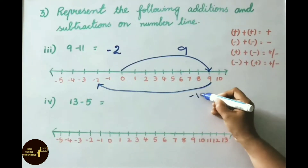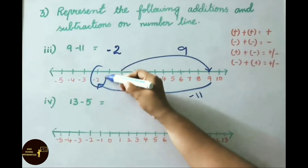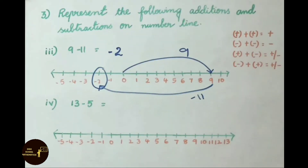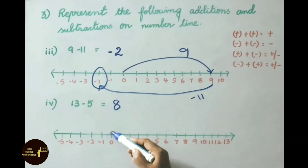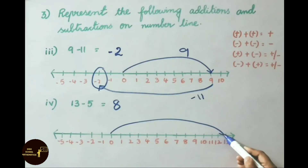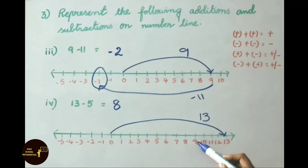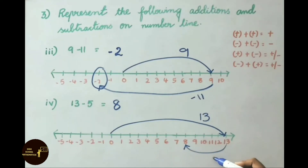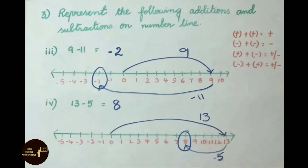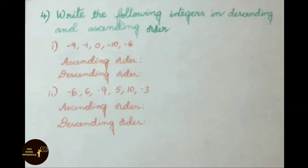Fourth: 13 - 5 = 8. On the number line, mark 13 starting from 0, then count 5 places backwards — 1, 2, 3, 4, 5 — and you land on 8. So 13 - 5 = 8.